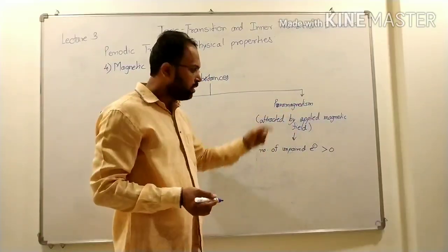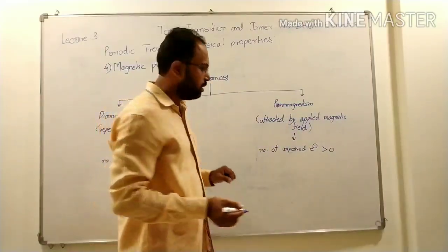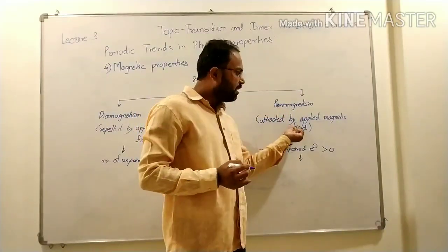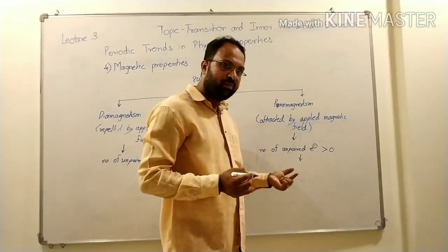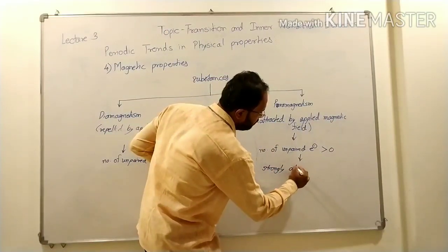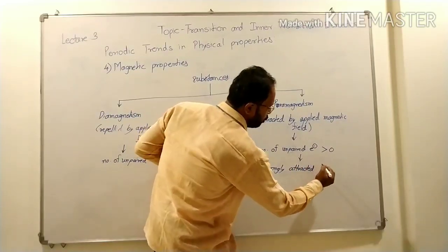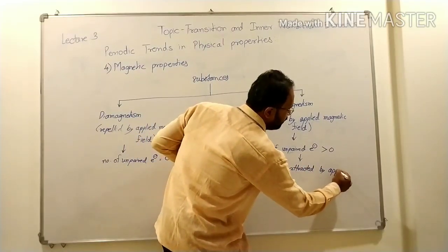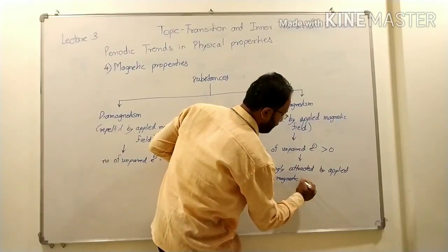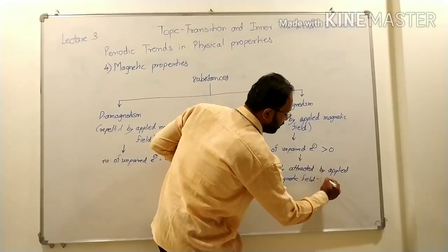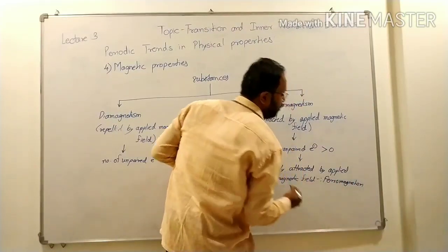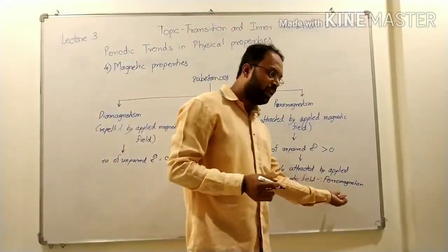All of these are paramagnetic, and among them some special properties are present. These substances are attracted by an applied magnetic field, but some substances are strongly attracted by an applied magnetic field. These are called ferromagnetic substances and that property is called ferromagnetism.